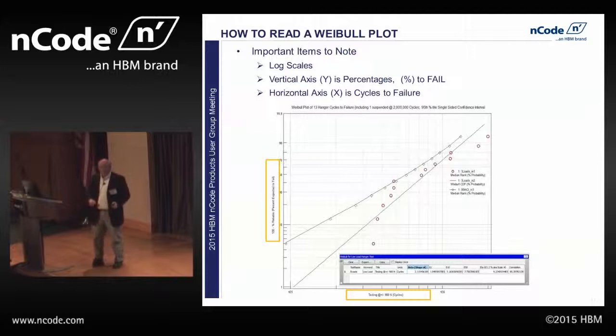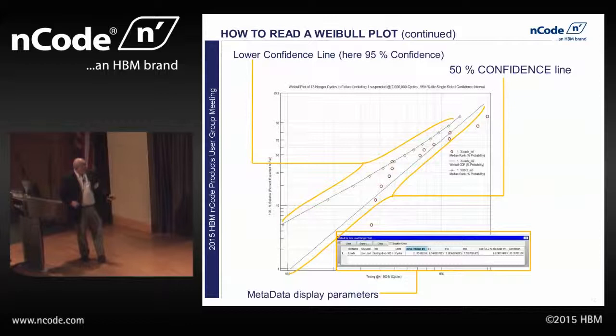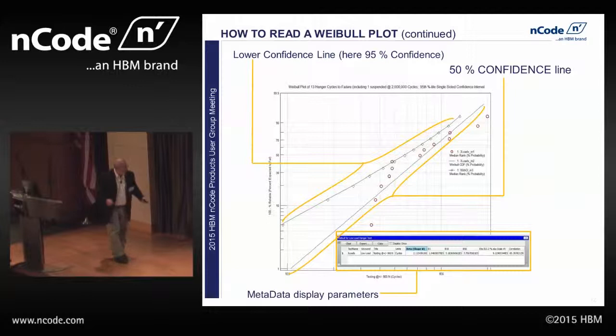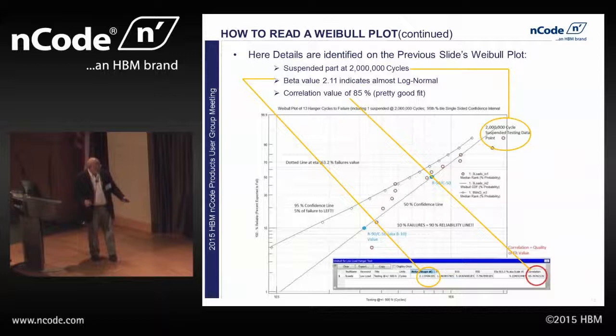I talked about the lower confidence interval line. We see that again here — the 50% confidence interval line and the best fit line. The data output tells us where this beta value is at 63.2%, gives us the shape number, and also gives us a correlation number — that's how tight the fit is to the line. In this case it's about 85%, which is a pretty good fit, and this one is almost log normal with a beta value of 2.11.